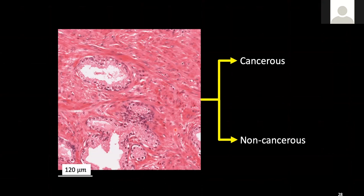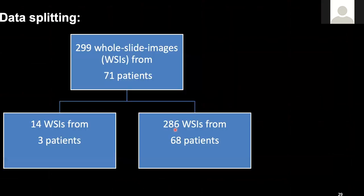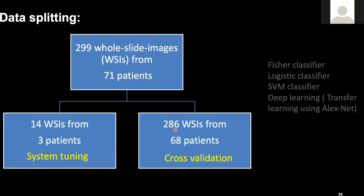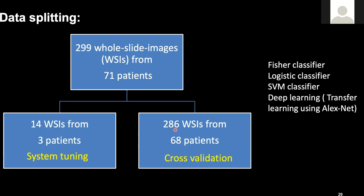We use this dataset and this diagram shows how we split the data from 71 patients into a tuning dataset and a validation dataset. In the tuning dataset we use three patients, whereas all the rest of the patients are used for cross-validation, ensuring the validation dataset is independent of the tuning dataset. We use the following classifiers: a conventional machine learning-based approach as well as a deep learning-based approach. We use cross-validation and group the data on a per-patient basis to ensure that samples from training and testing are from different patients.